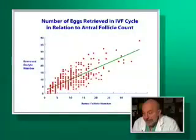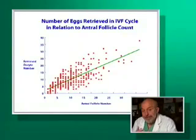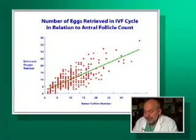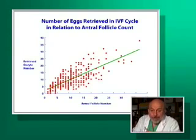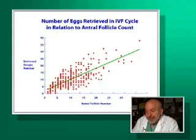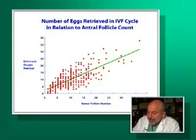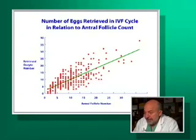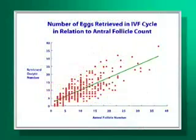If we do in vitro fertilization, we all know that the pregnancy rate is related to the number of eggs obtained in a stimulation cycle. In a standard conventional stimulation cycle, it's very clear that the pregnancy rate is related to the number of eggs, and you can see from this graph that the number of eggs you retrieve in an IVF cycle is related to your antral follicle count.